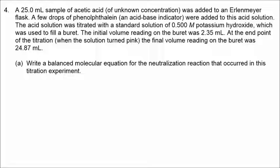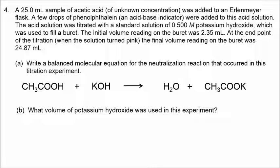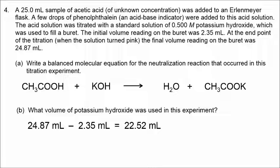In this example of an acid-base neutralization, we have acetic acid of unknown concentration reacting with potassium hydroxide of known concentration. Acetic acid is CH3COOH, and potassium hydroxide is KOH. They produce water plus potassium acetate. The volume of the titrant, potassium hydroxide, is calculated by subtracting the initial volume from the final volume, giving us 22.52 milliliters of potassium hydroxide added.